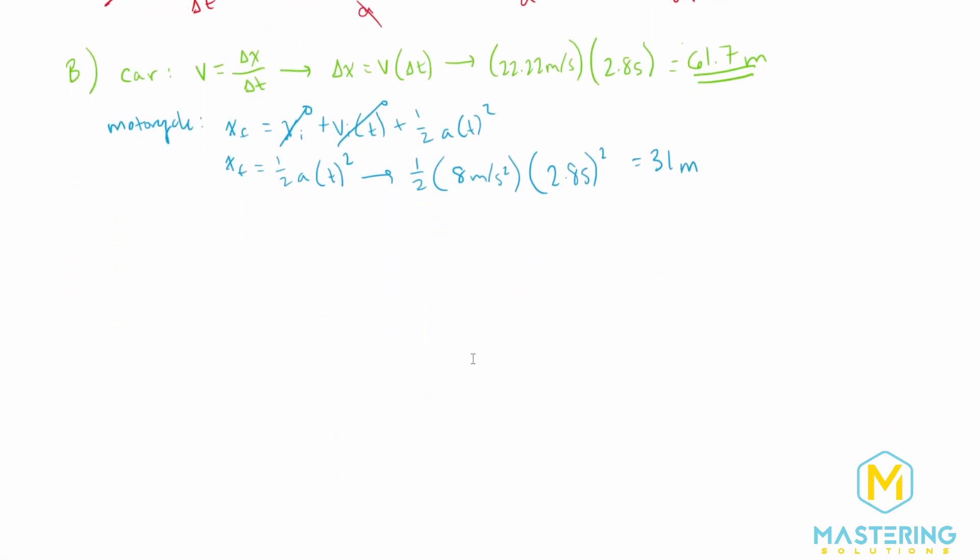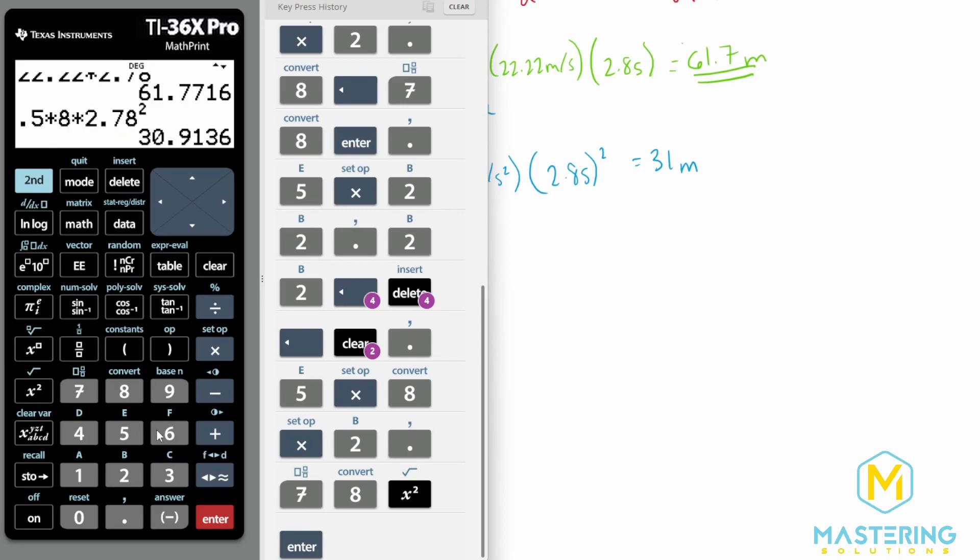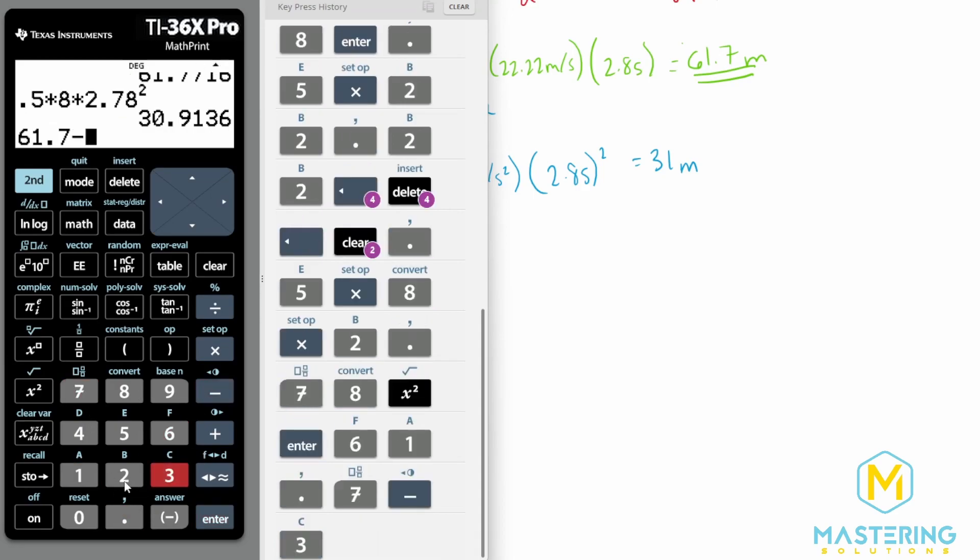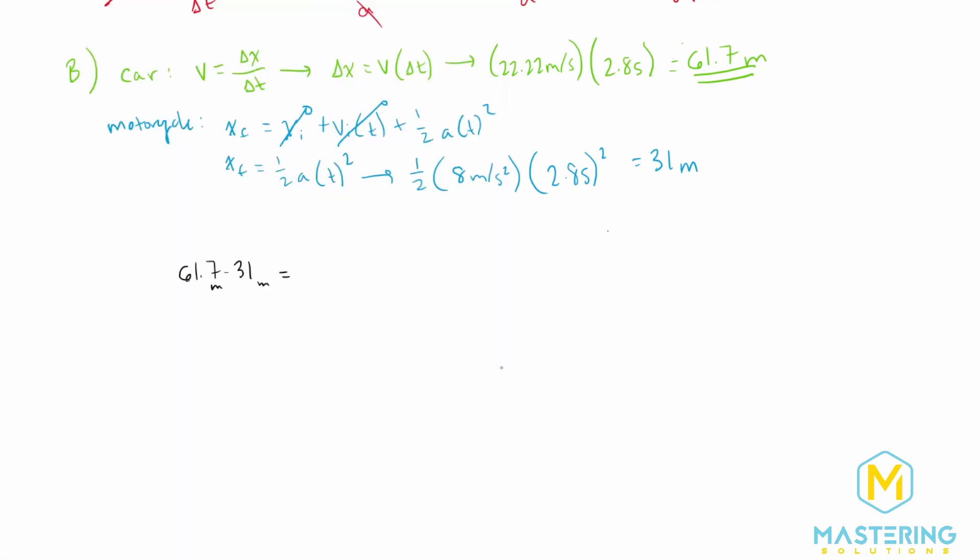Now we have the distance for both of them. We just subtract the two to get how far away the motorcycle was from the car. 61.7 minus 31 gives us 30.7, or rounded, 31 meters. So the distance the motorcycle was from the car in that amount of time was 31 meters.